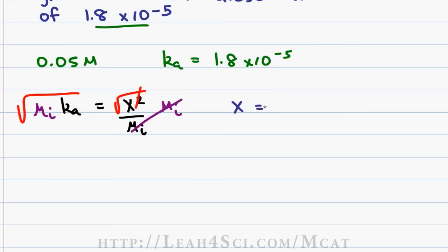This gives me an equation as follows: x equals the square root of the initial molarity which is 0.05 and a Ka of 1.8 times 10 to the minus 5. And this is where my student froze.